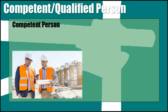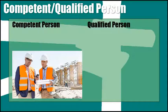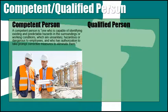We talk a lot about the competent person and the qualified person in the eyes of OSHA, so let's first identify what that really means. According to OSHA, a competent person is one who is capable of identifying existing and predictable hazards in the surroundings or work conditions which are unsanitary, hazardous, or dangerous to employees, and who has the authorization to take prompt corrective measures to eliminate them.